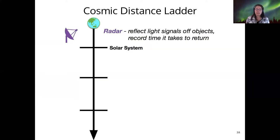And the first of these is the method of radar ranging. This is the idea of just taking a radio signal from Earth and bouncing it off of an object and then recording the time it takes to come back. This is really useful for measuring the distance to objects within our solar system. So the distances to the planets are generally known by radar ranging.